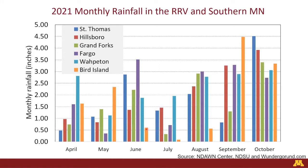Looking at the rainfall up and down the valley and southern Minnesota, we were pretty dry. Look at Bird Island and Grand Forks — it's pretty dry; we got a little bit of moisture in May and June, more or less normal to dry. In October we received some more rain. So some of the diseases, based on what you answered in the survey, reflect kind of the rainfall pattern.